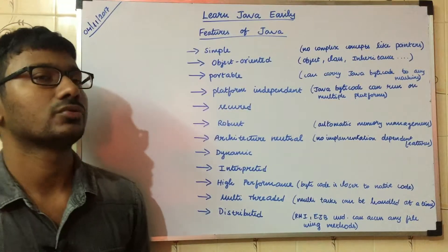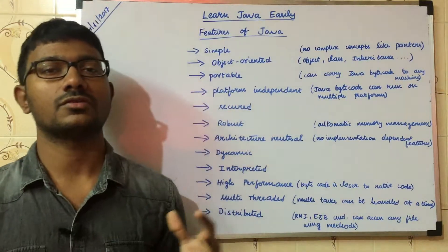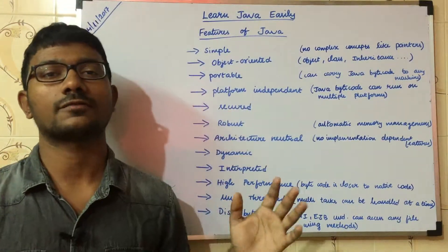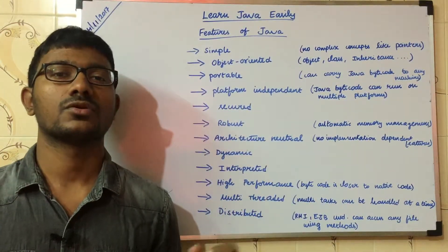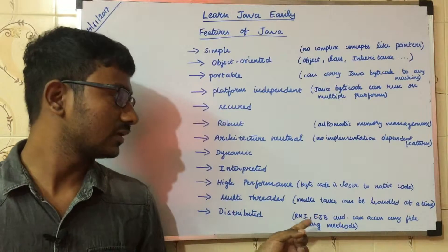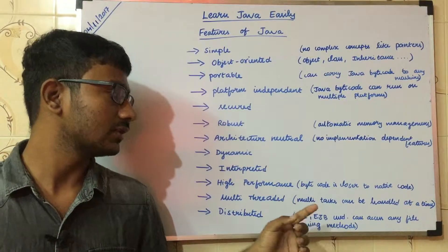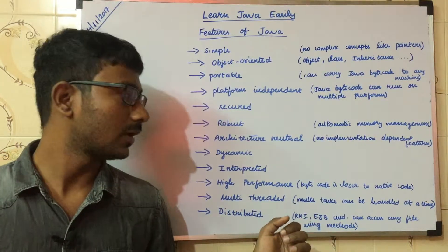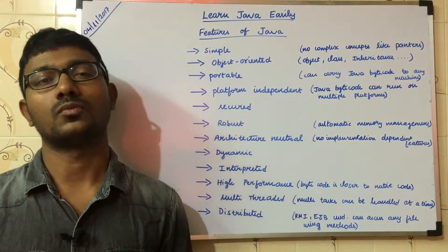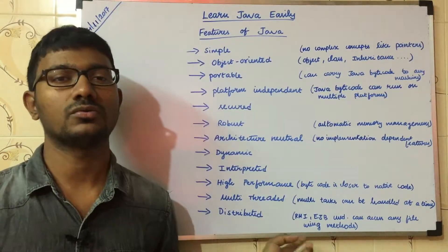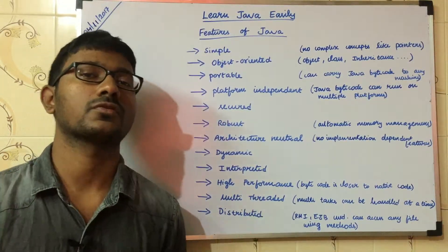And distributed. Distributed means the work is distributed across many systems. Using RMI and EJB in Java, we can achieve this. We will talk more about this in the upcoming videos.